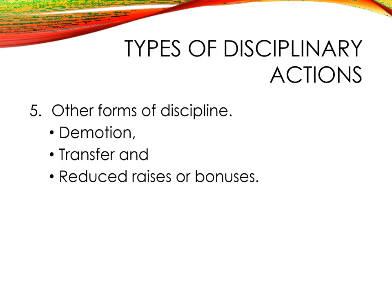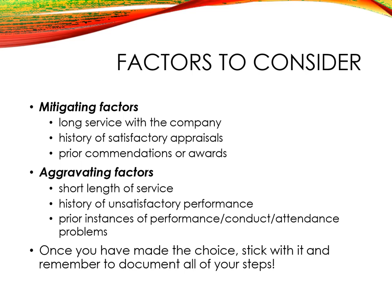In addition to the four basic elements of progressive discipline, there can be other disciplinary measures such as demotion — transferring an employee to a lower position — transfer to another workplace, or reduced raises or bonuses. Factors the employer must consider when dealing with disciplinary problems include mitigating factors, such as the employee's length of service, previous satisfactory appraisals, and prior awards or commendations; and aggravating factors, such as short length of service, history of unsatisfactory performance, and prior instances of performance, conduct, or attendance problems.